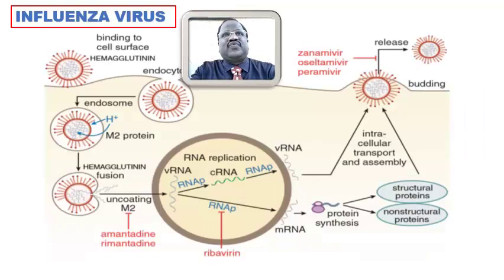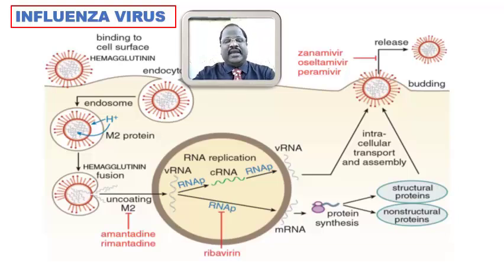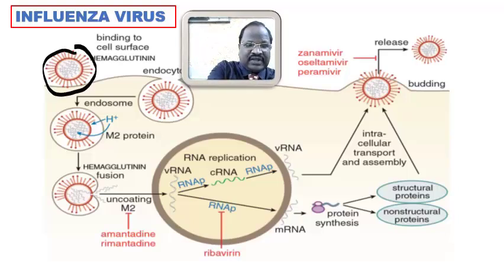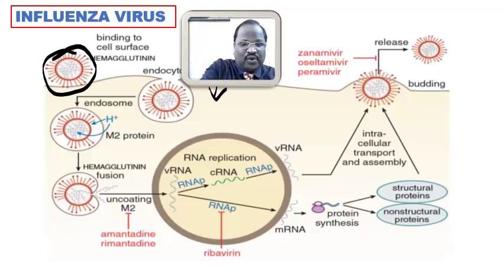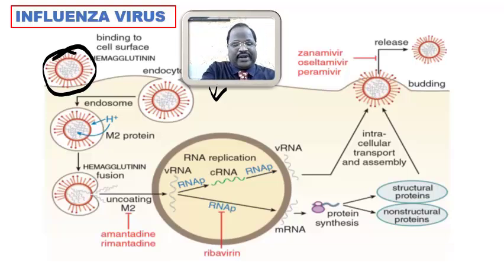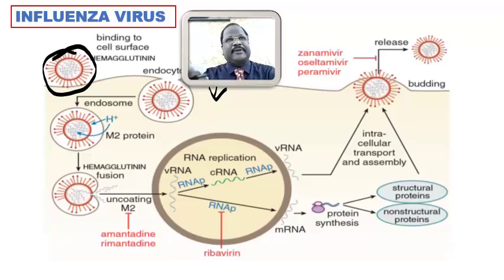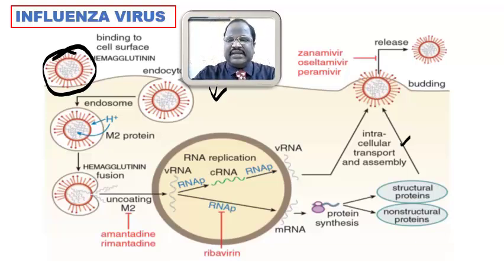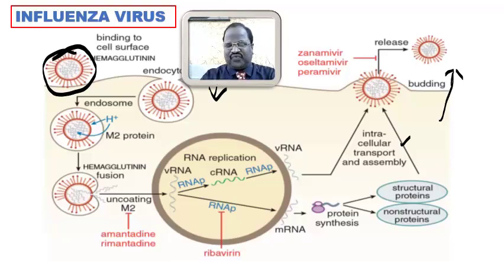After finishing drugs for herpes simplex and cytomegalovirus, now we move to influenza virus. When influenza virus enters human cells, it has an outer layer made up of M2 protein. That M2 protein first undergoes uncoating. Once uncoating occurs, the viral genome joins the host genome, starts viral replication, and produces newer viral progeny. These progeny are assembled, mature, and then released from the cells, causing bronchitis, pneumonitis, and influenza flu-like symptoms.